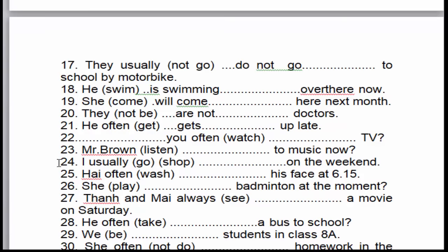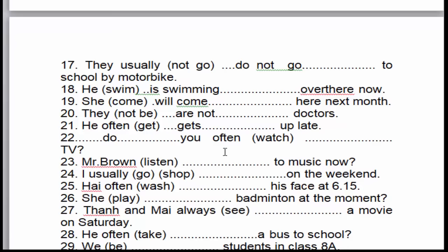Câu số 22: 'Do you often watch TV?' Đây là dạng câu hỏi. 'Often' là dấu hiệu nhận biết của thì hiện tại đơn. Dạng câu hỏi thì chúng ta dùng trợ động từ. 'You' là chủ ngữ số nhiều, cho nên chúng ta sử dụng trợ động từ 'do'. Động từ để lại nguyên mẫu.